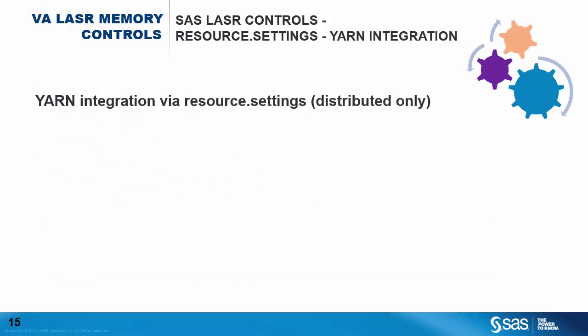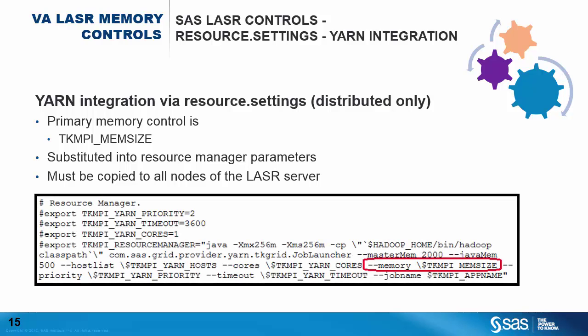The same resource.settings file is used to integrate YARN with the LASR server. TKMPI_MEMSIZE is also used when using YARN to manage resources — the parameter is passed to the resource manager and specifies the amount of memory for YARN to reserve. Like the configuration for non-YARN environments, the resource.settings file must be copied to all nodes of the LASR server. This screenshot shows where the TKMPI_MEMSIZE parameter is passed to the resource manager.